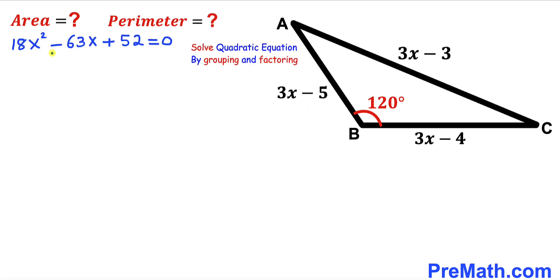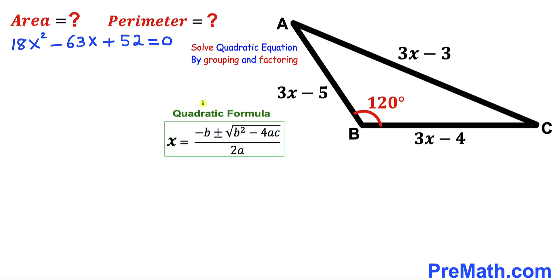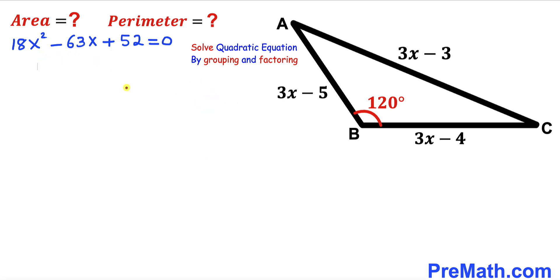Combining those like terms, we arrive at the quadratic equation 18x² minus 63x plus 52 equals 0. We are going to solve this quadratic equation by grouping and factoring, though you may also use the quadratic formula. Let's focus on the leading coefficient 18 and the constant 52.